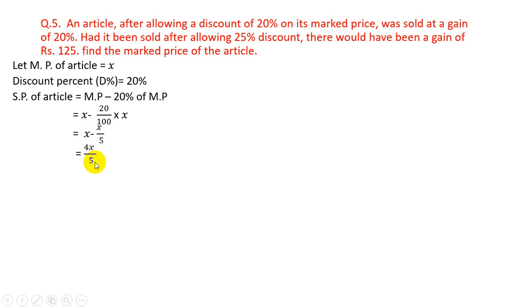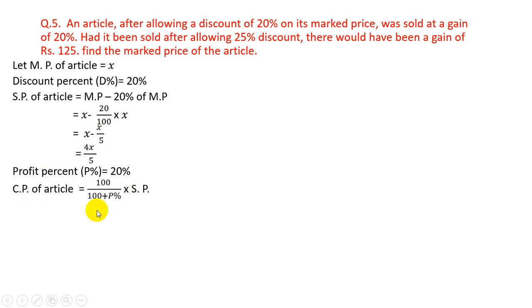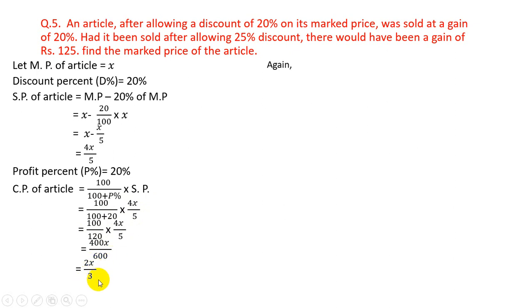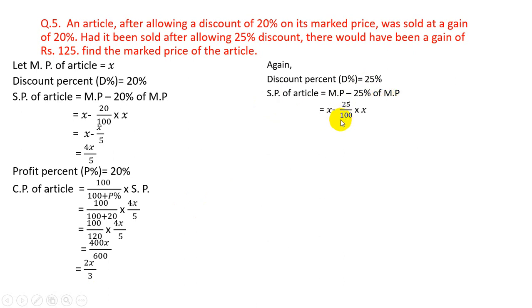Profit% = 20%, so CP = 100/(100 + 20) × SP = 100/120 × 4X/5 = 400X/600 = 2X/3. Now if discount = 25%, SP = MP − 25% of MP = X − X/4 = 3X/4.